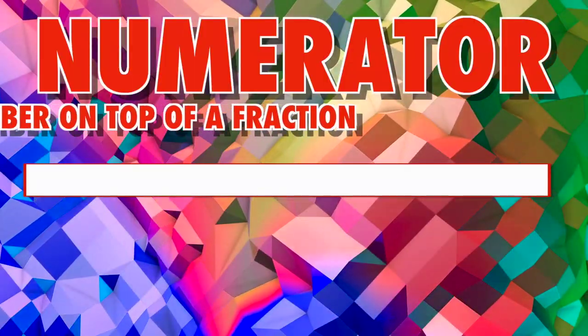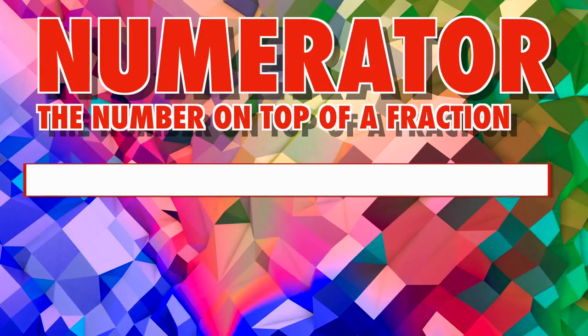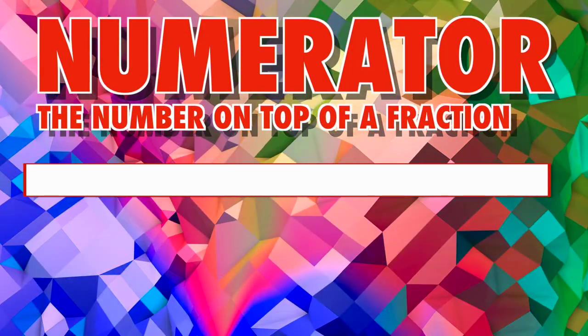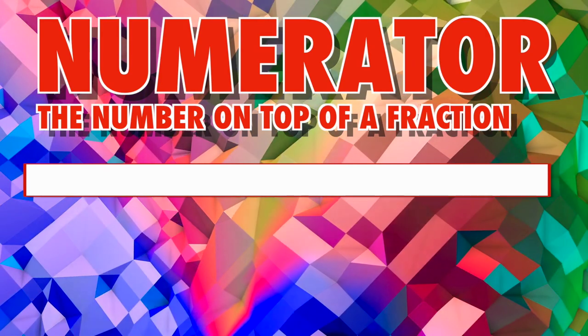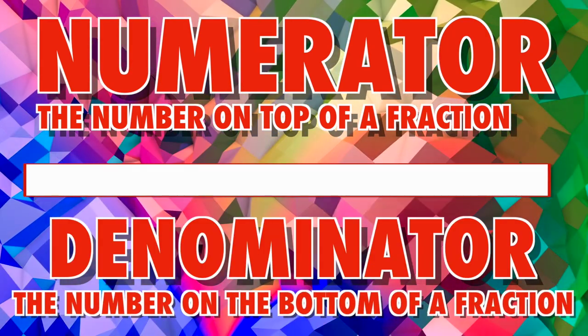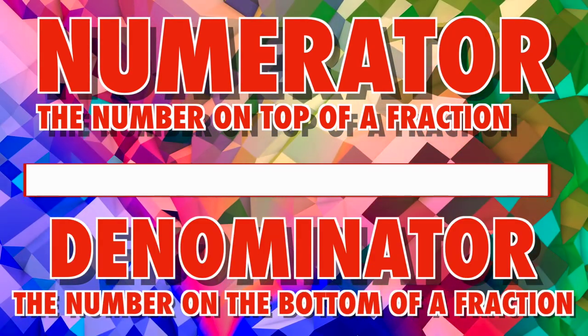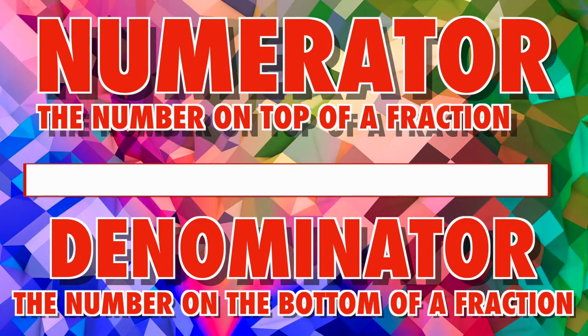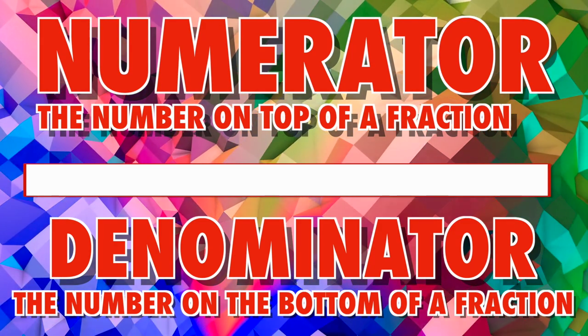Today's two vocabulary terms are numerator and denominator. The numerator is the number above the line in a fraction that indicates how many parts of the whole. The denominator is the number below the line in a fraction that is a divisor.